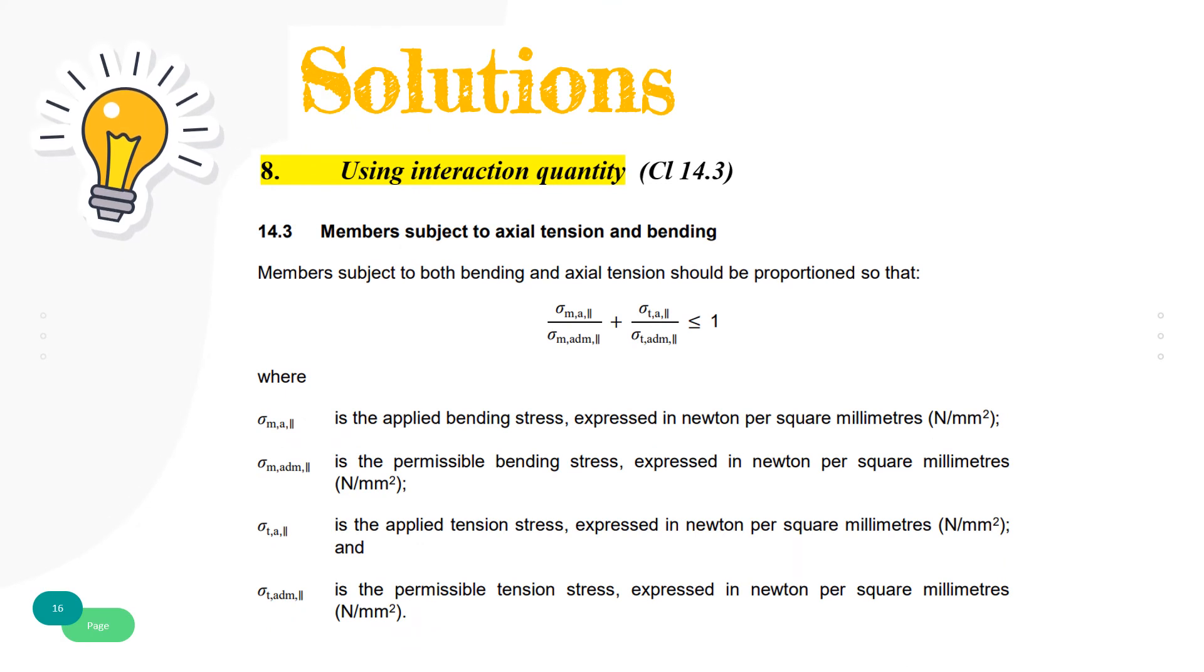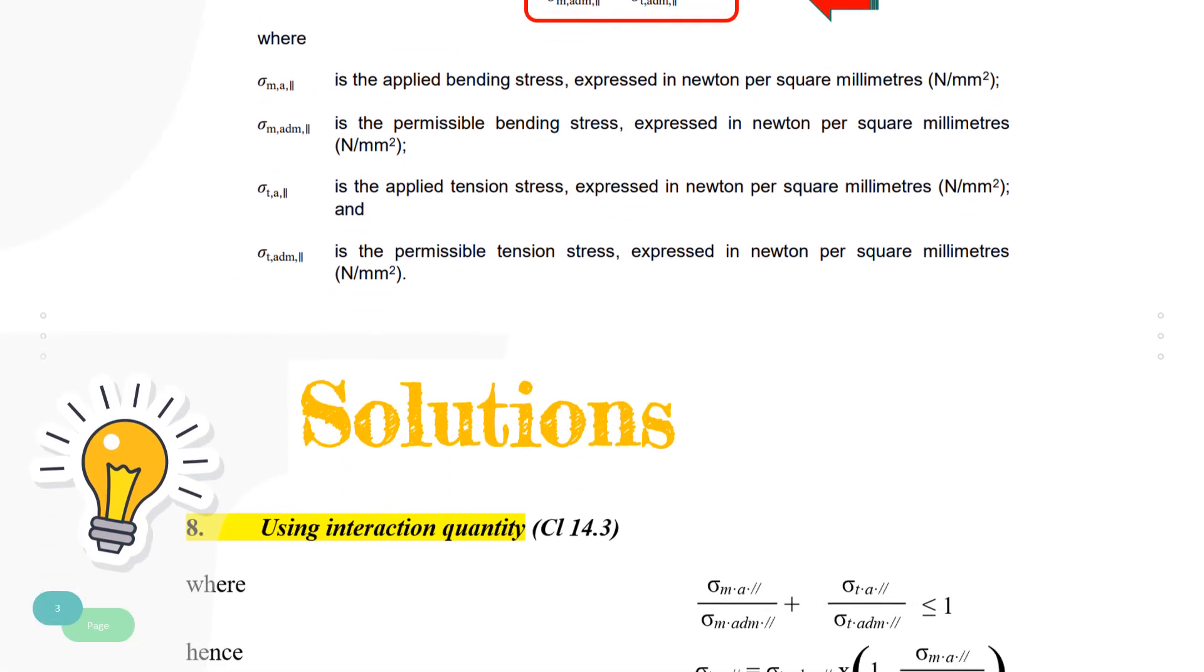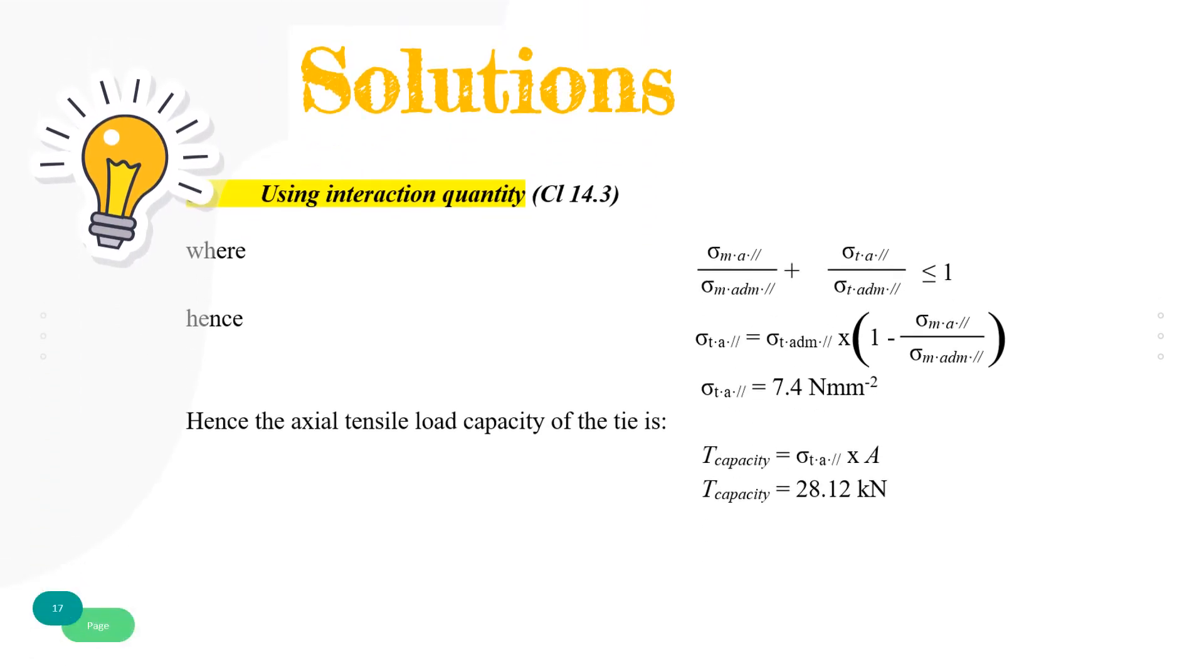The final step is to check the interaction quantity formula in clause 14.3 for members subject to axial tension and bending. The combination of tension and bending stress must be equal or less than 1 to satisfy interaction quantity formula. Referring to the question, we need to determine the capacity of the axial tensile load of the tie. By substituting all the values of stresses from previous steps with the condition of interaction quantity satisfying equal to 1, the applied tensile stress calculated by rearranging the formula becomes 7.4 N/mm².